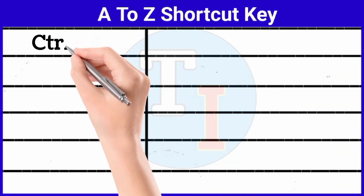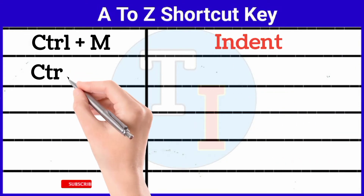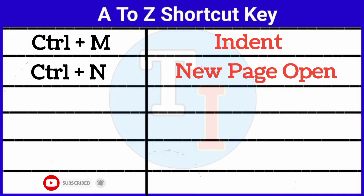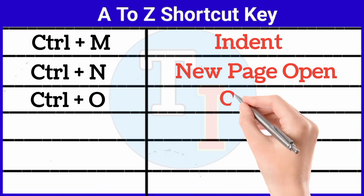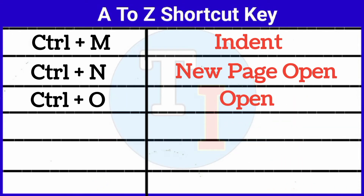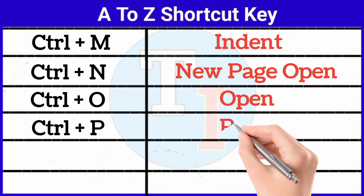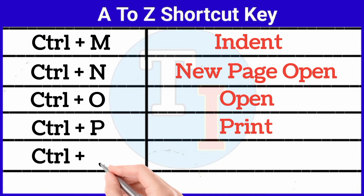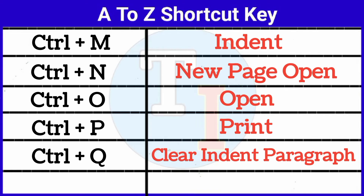Ctrl plus M: indent. Ctrl plus N: new page open. Ctrl plus O: open. Ctrl plus P: print. Ctrl plus Q: clear indent paragraph.